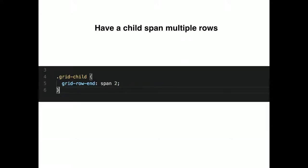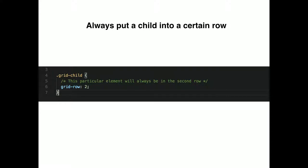You can have a child span multiple rows — just put 'span 2.' You can also always have a grid child appear in a specific row. I remember on a Lullabot project for the Sci-Fi Network we had a masonry layout where we'd always inject a banner ad right below the first row, but it needed to be responsive — sometimes four columns, sometimes three, sometimes two. I had all this crazy JavaScript for it. If we had CSS Grid then, it would have been done immediately and been much more performant.